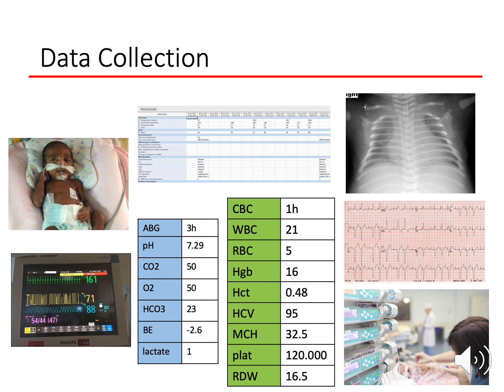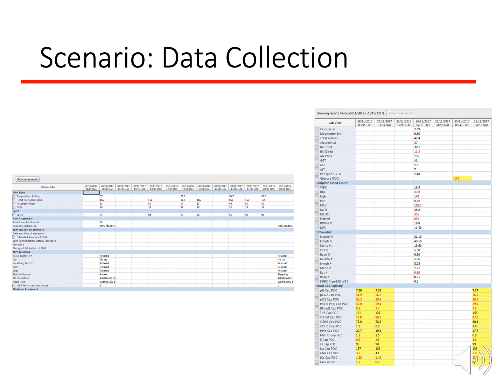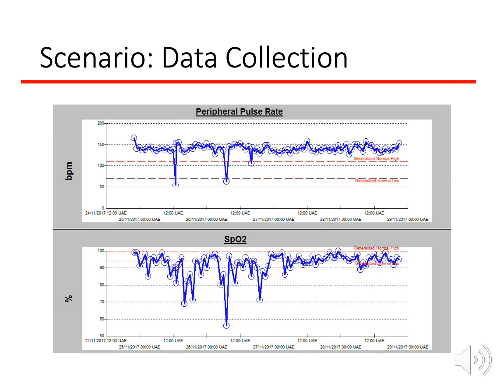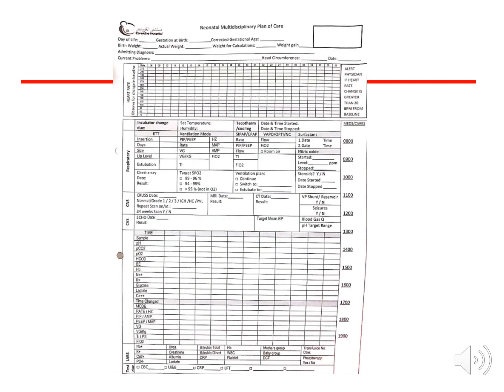Look at the record: check vitals, CBC, other investigations, and trends. If the monitor gives you trends, look at those trends. If you don't have a computer, a paper record also contains a lot of information — ventilator settings, labs, bilirubin, X-rays, medications. You can get a great deal from a hard copy record even without technology.